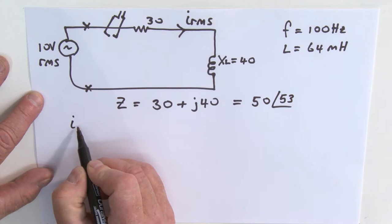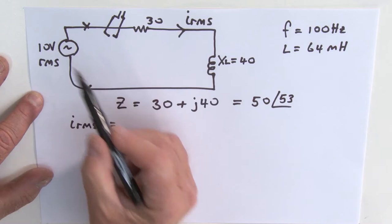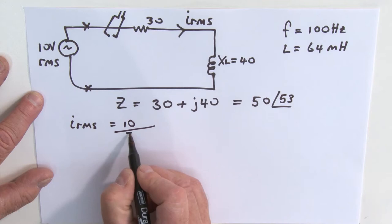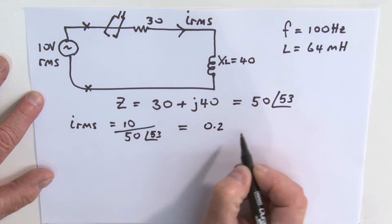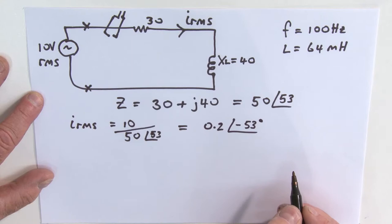The current IRMS is going to be equal to this 10 volts over here, divided by the impedance, which is 50 at an angle of 53 degrees. Let's evaluate this. This would be equal to 0.2 at an angle of minus 53 degrees.